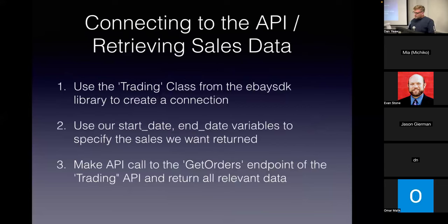Next we're going to establish a connection to eBay's API and retrieve our sales data. We'll do this using the Trading class from the eBay Standard Developers Kit library to create a connection, then plug in our start date and end date variables to specify the sales we want returned. We'll make an API call to the get_orders endpoint of the eBay Trading API and return all of our relevant data.